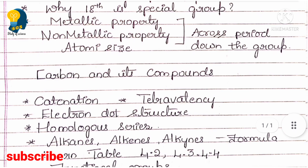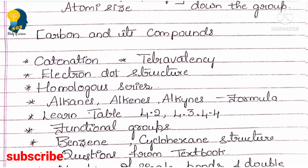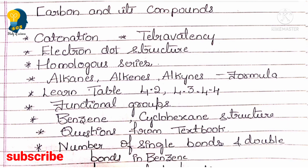Next is Carbon and Its Compounds. You are lucky because only half of the lesson is included for your exam. The important topics you must study without fail are: catenation and tetravalency — these are the unique properties of carbon. Study the definitions of catenation and tetravalency. They can ask why carbon is so special, and you have to explain these properties. Also practice the electron dot structures of various saturated and unsaturated hydrocarbons and functional groups, and study the homologous series, which the resource person stressed as very important.